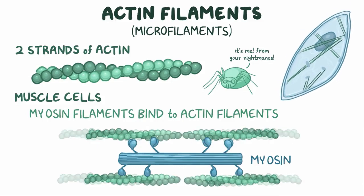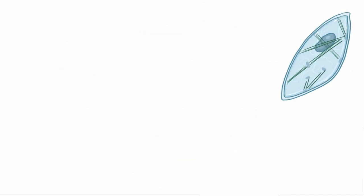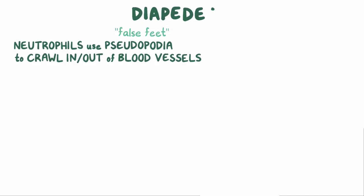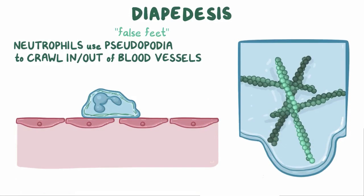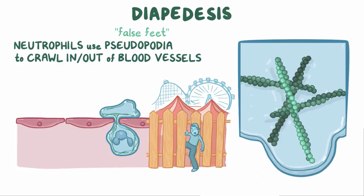Sometimes these networks change their shape, and that allows cells to move. White blood cells like neutrophils use extensions called pseudopodia, or false feet, to crawl in and out of blood vessels, a process called diapedesis. The neutrophil's actin filaments grow rapidly through the polymerization of many actin monomers in one direction, to push out the cell membrane and create a foot. This newly created foot wedges between the endothelial cells that make up the blood vessels, and the neutrophil then begins to squeeze through until it reaches the other side.